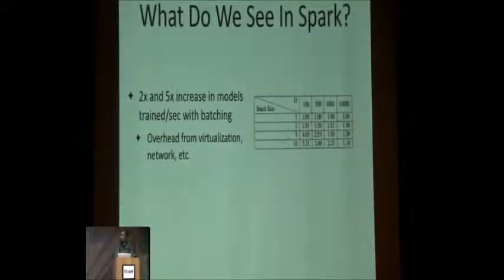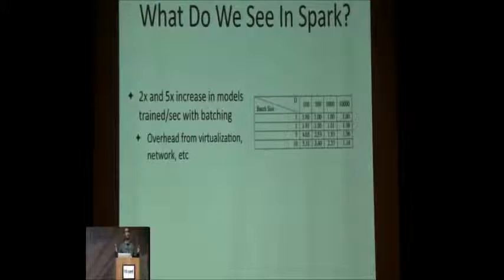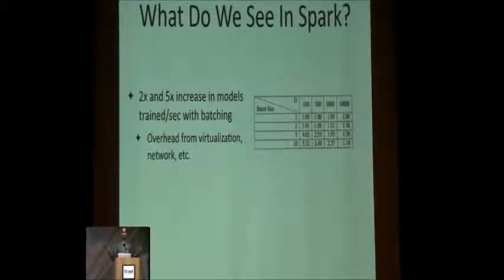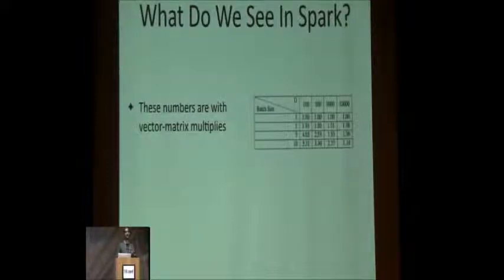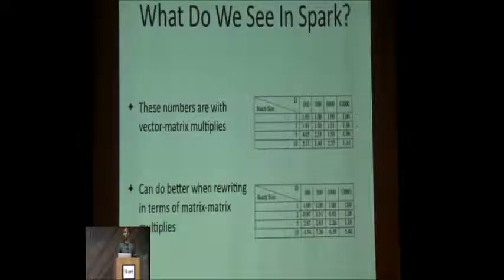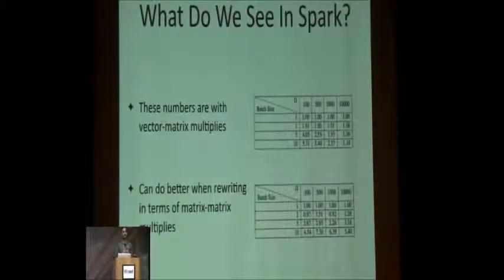We tried this in Spark and our first results were somewhat mixed. In this table, each row is batch size — training one model up to ten models in parallel per iteration — and each column is the feature dimension. Training ten models at a time with 100 features gives over a 5x speedup. But once you reach feature spaces of 10,000 dimensions, which isn't really that large for big data, we lose all of that speedup, down to 1.1x. However, these initial experiments were naive. By rewriting updates as matrix-matrix multiplies and using fast low-level linear algebra libraries like LAPACK, we still get over a 5x speedup even with large feature spaces.